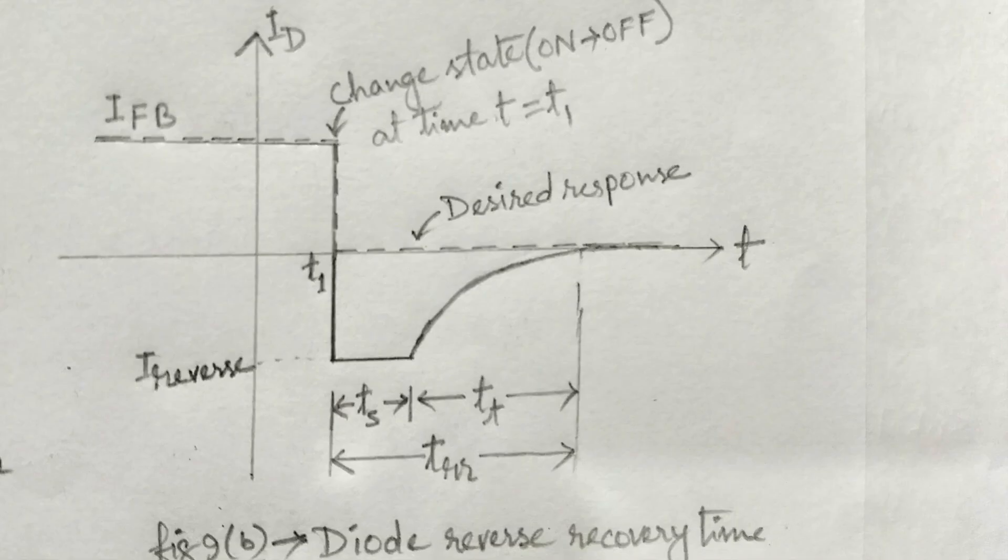Thus, when the applied voltage is reversed, because of large number of minority carriers present in both the region, the diode current will reverse, as shown in this figure 9B.